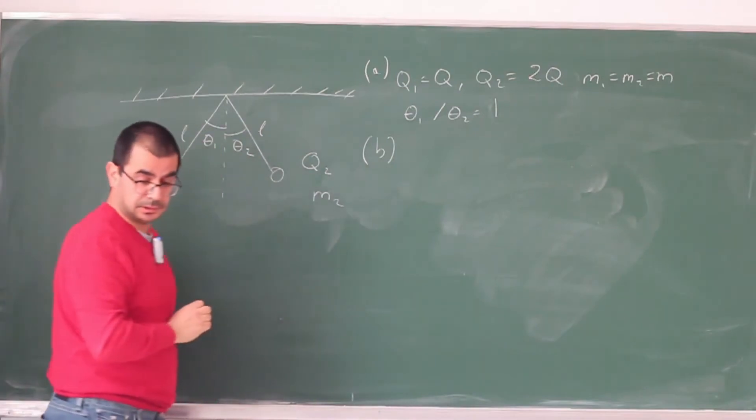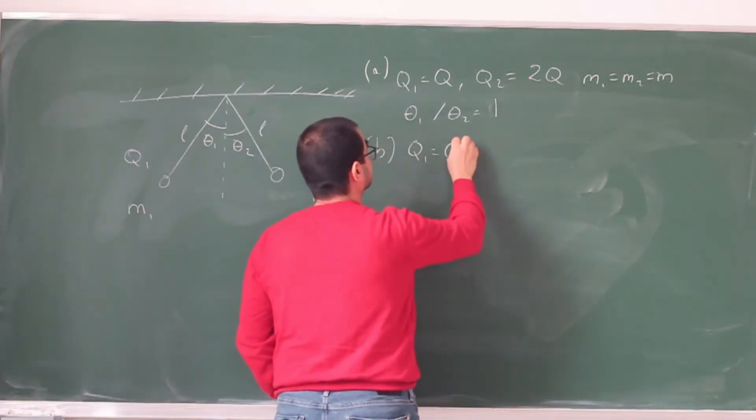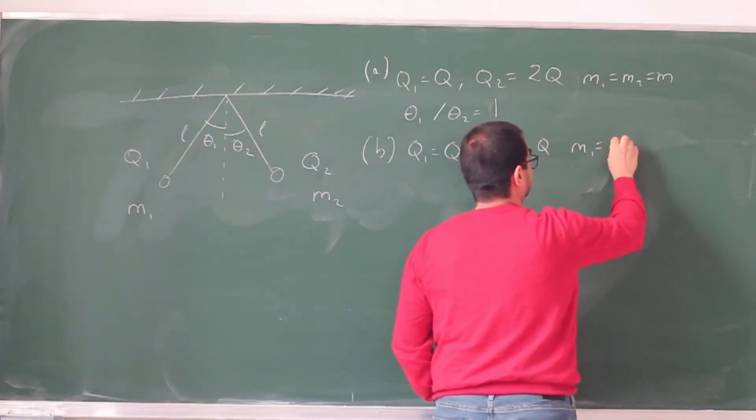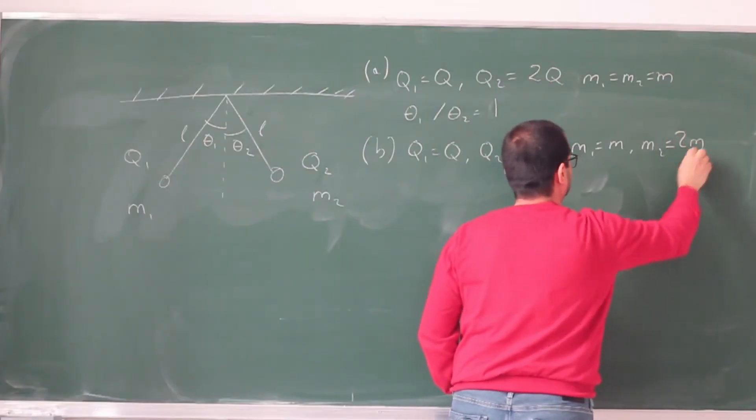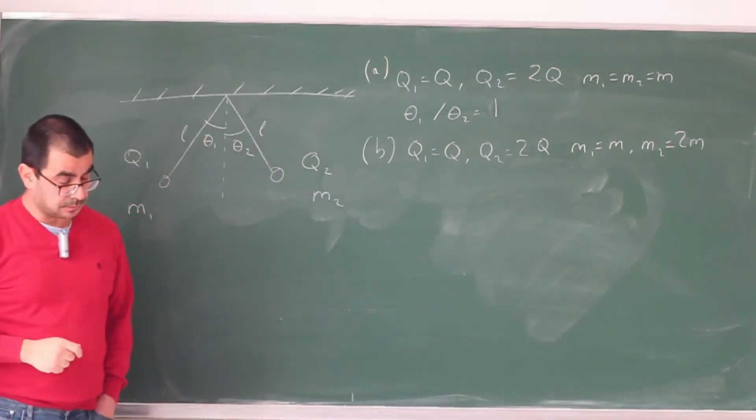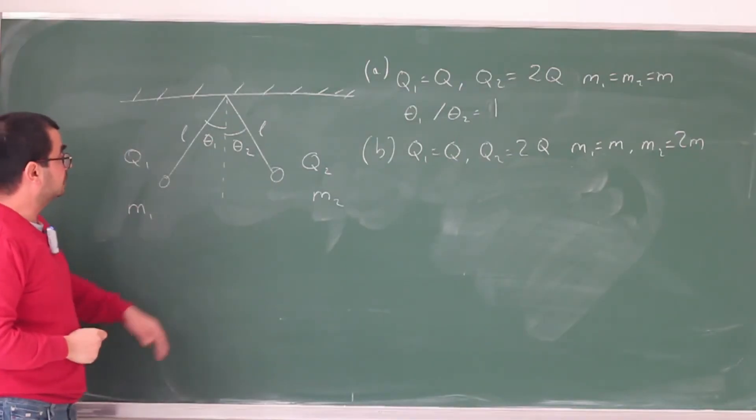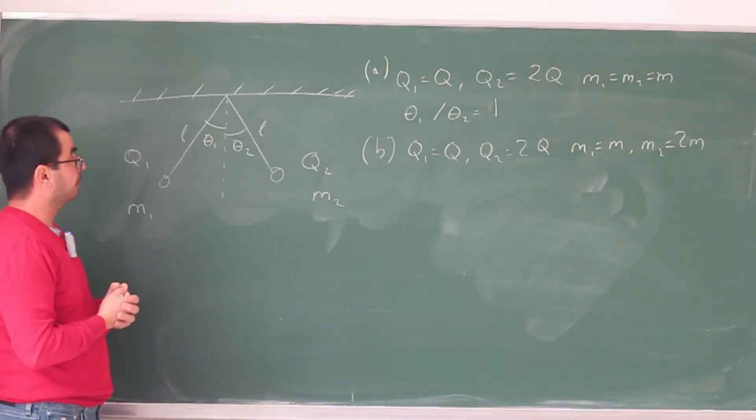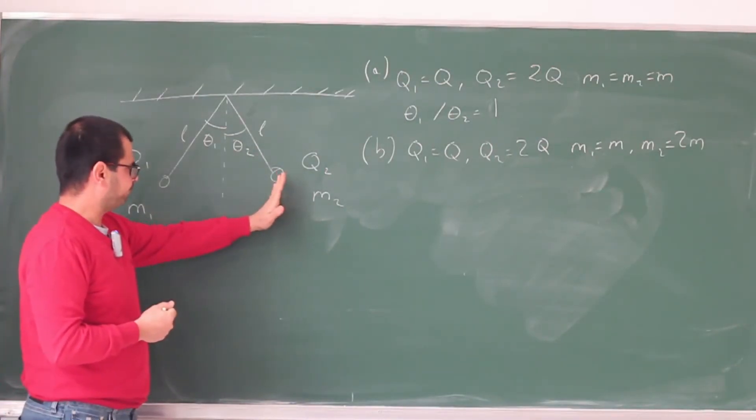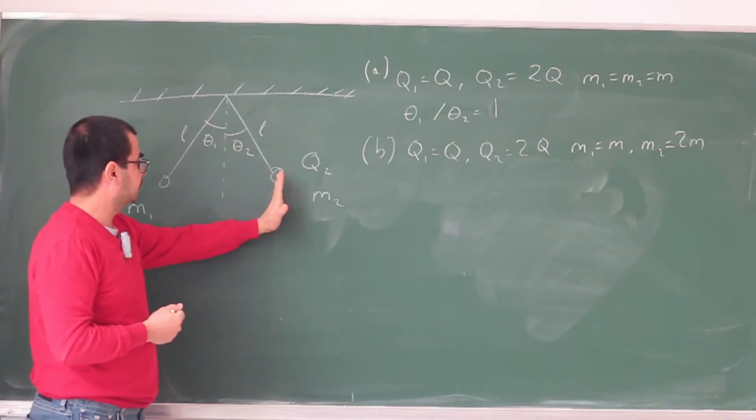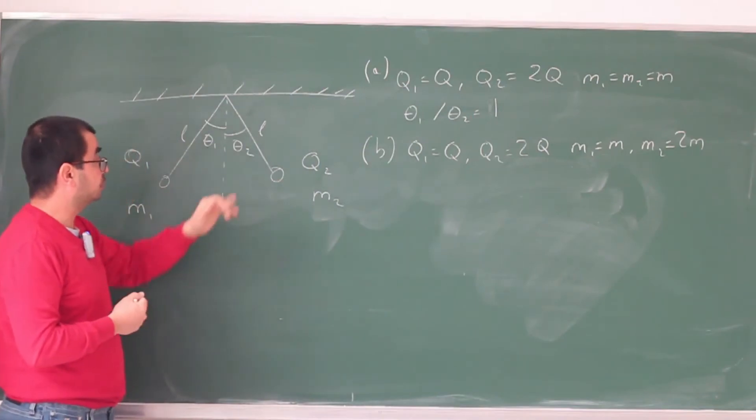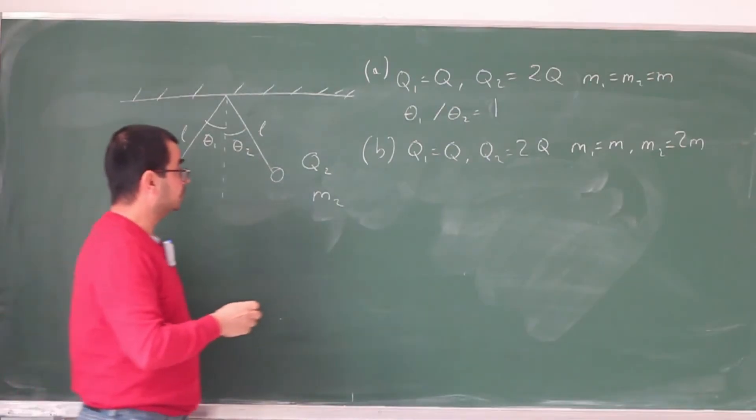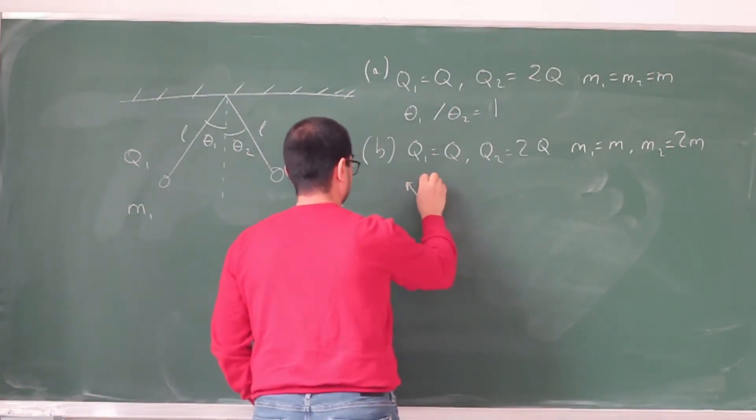Now for part B, I think they are keeping Qs the same. So Q1 is equal to Q, Q2 is equal to 2Q. But now M1 is equal to M, and M2 is equal to 2M. So now the situation is not completely symmetrical. But instead, what we have is that this has more gravitational force acting on it, and this is going to lead to a different situation. So how does this ratio, this ratio of the gravitational force to electrostatic force, determine this angle theta? If that ratio changes, that angle theta is also going to change.